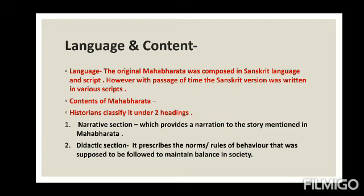When historians have to understand the content of the Mahabharata, they classify it under two headings: one is called the narrative section and the other is called the didactic section. The narrative section, as the name suggests, is derived from the word 'narration.' Certain sections within the Mahabharata purely talk about stories. The central narrative of the Mahabharata is about two sets of warring cousins and how that resulted in the Mahabharata war — so there are prominent narrative sections in it.